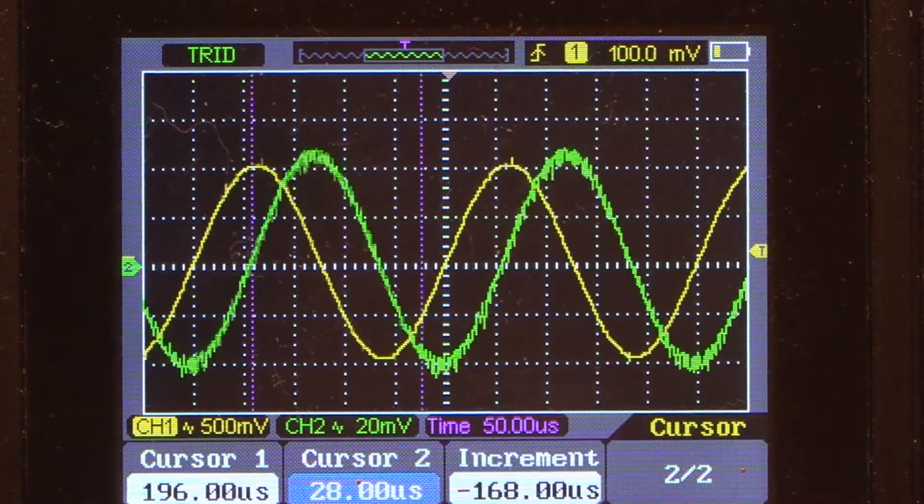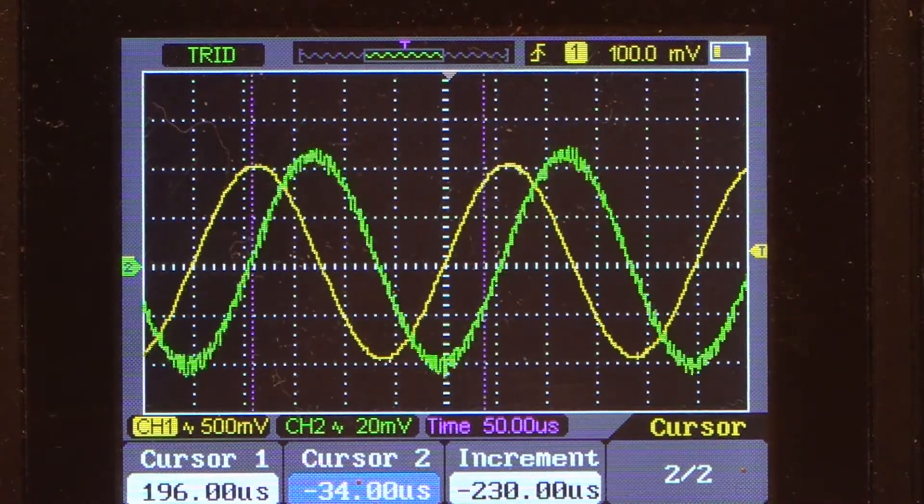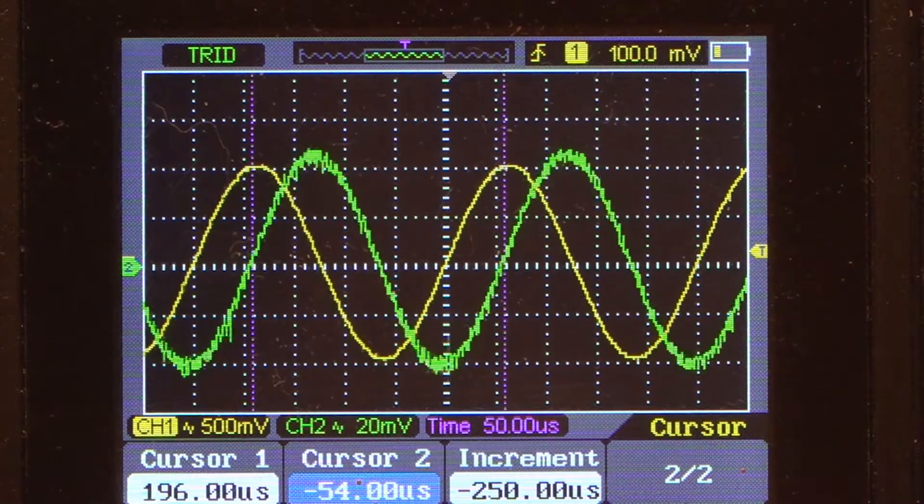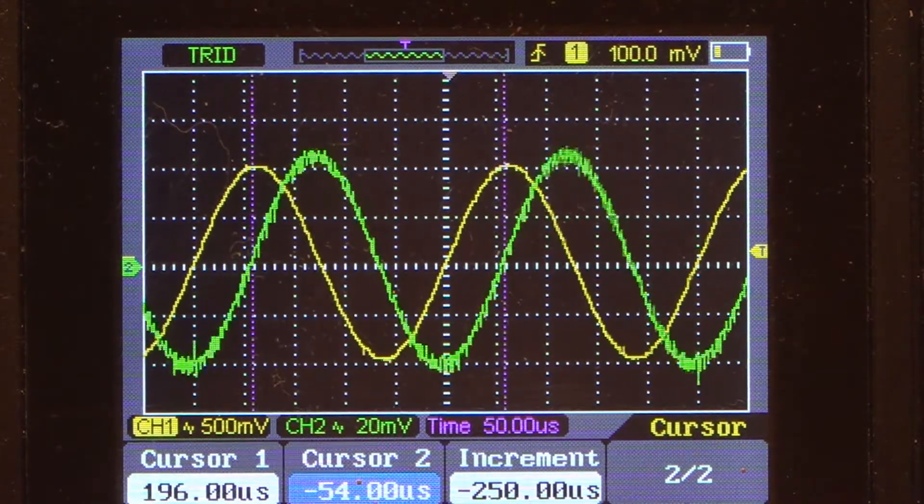Now the good thing here is I can go between the peaks of the waveform on channel 1 and it gives me a delta T under increment which is 250 microseconds which corresponds to 4 kilohertz.